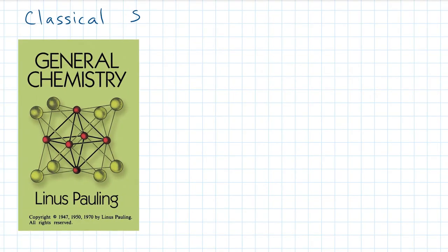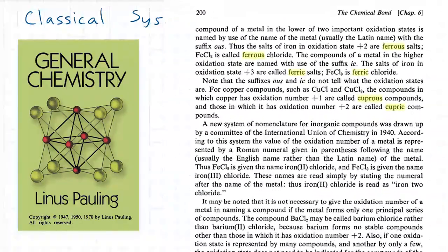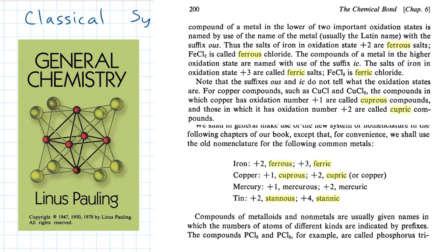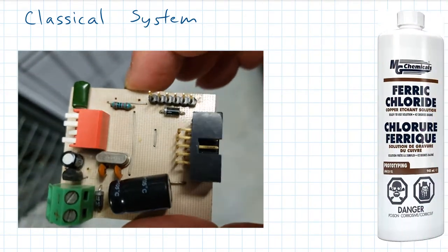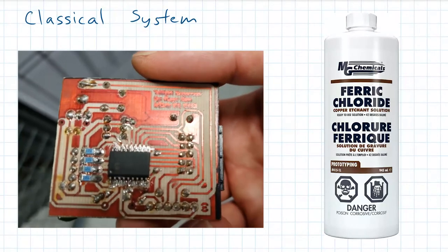If you take a look at your parents' or grandparents' chemistry textbook, it might describe multivalent chemicals slightly differently. In fact, when I used to etch my own circuit boards, I had to use ferric chloride to dissolve away the unwanted copper on the circuit board.